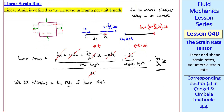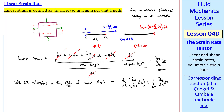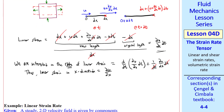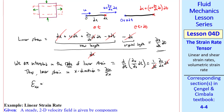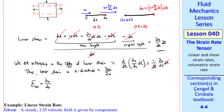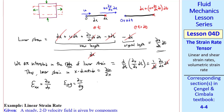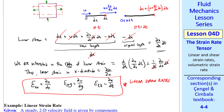Remember that in fluids we are interested in the rate of linear strain, which is d/dt of the linear strain. We approximate this as (1/dt) · ∂u/∂x · dt, and the dt's cancel. Thus, the linear strain rate in the x direction is just ∂u/∂x. We use the notation ε_xx for the linear strain rate in the x direction. Similarly, ε_yy is ∂v/∂y, and ε_zz is ∂w/∂z. These are the linear strain rates in Cartesian coordinates.